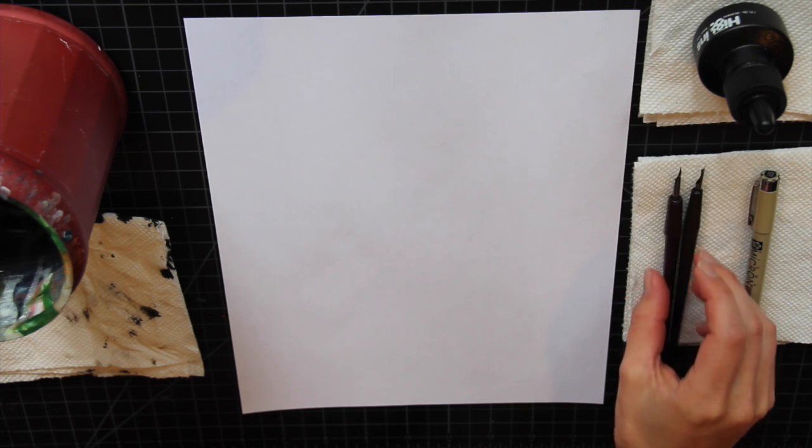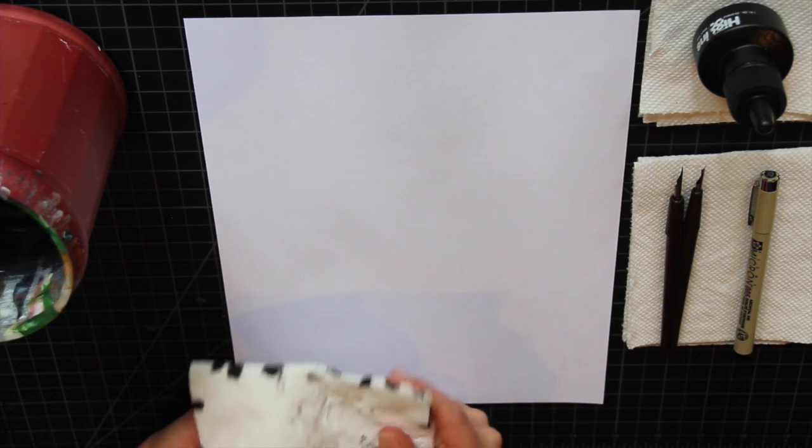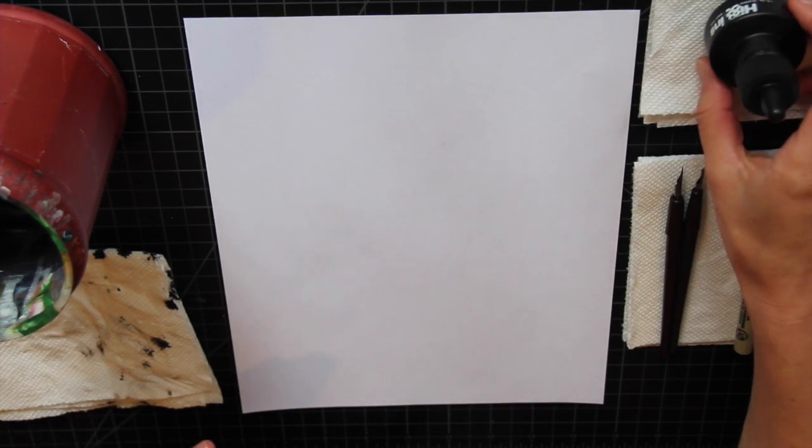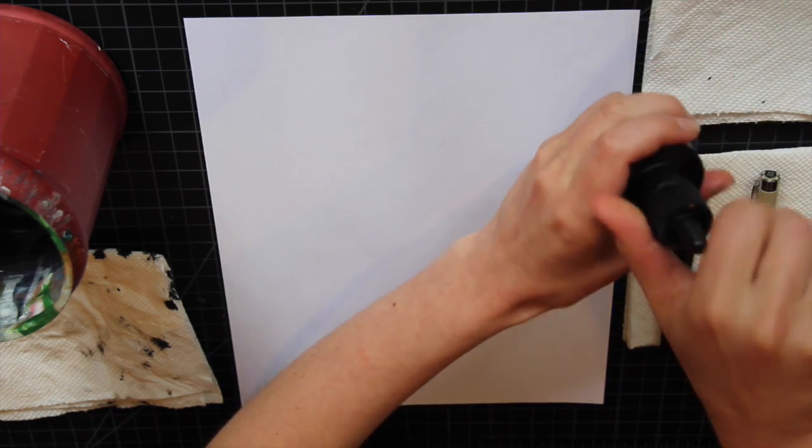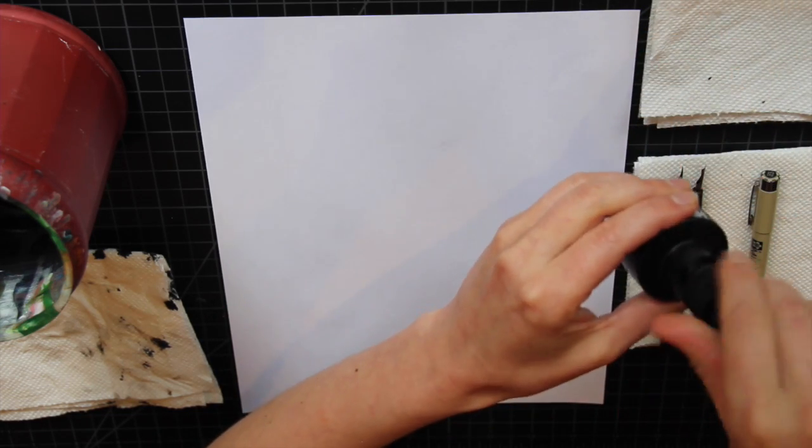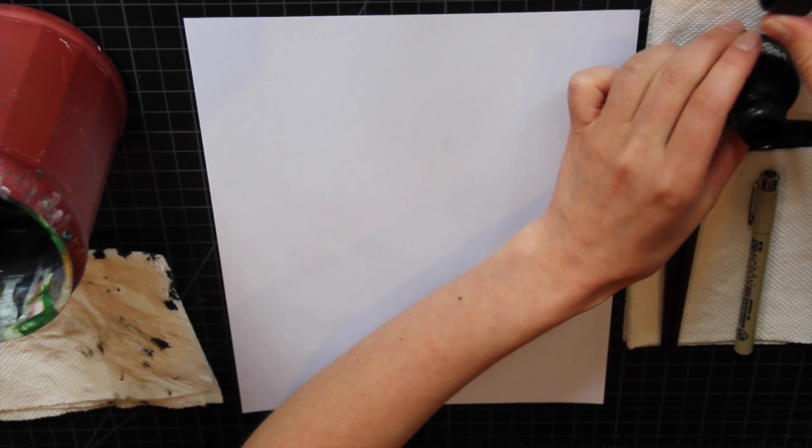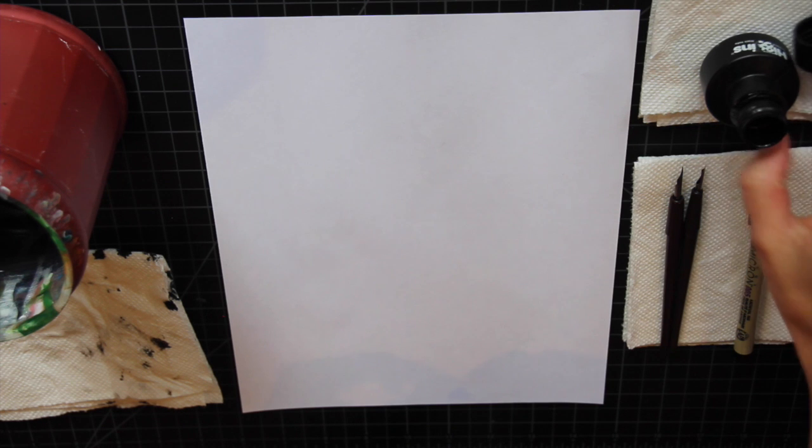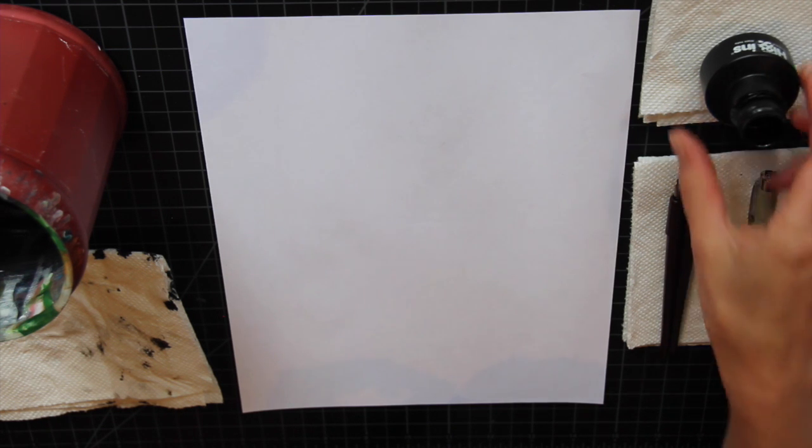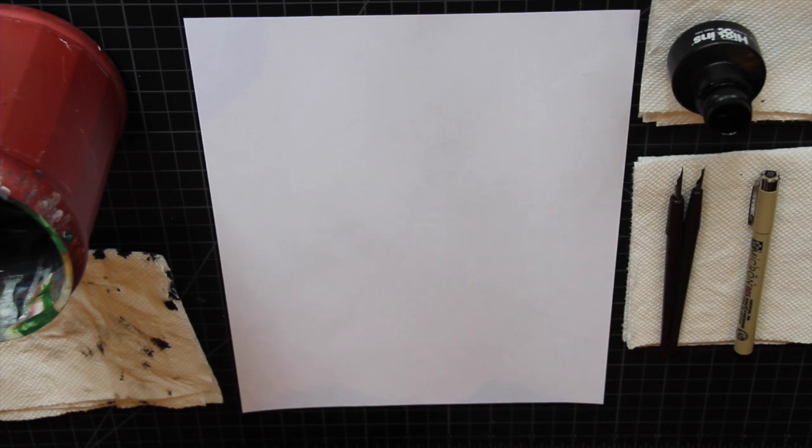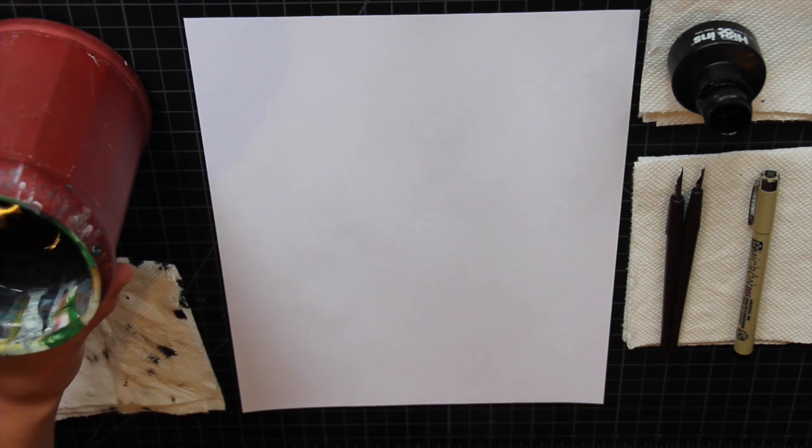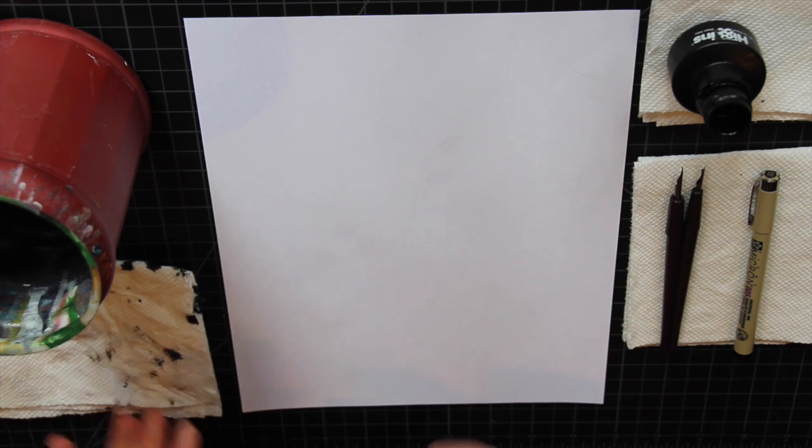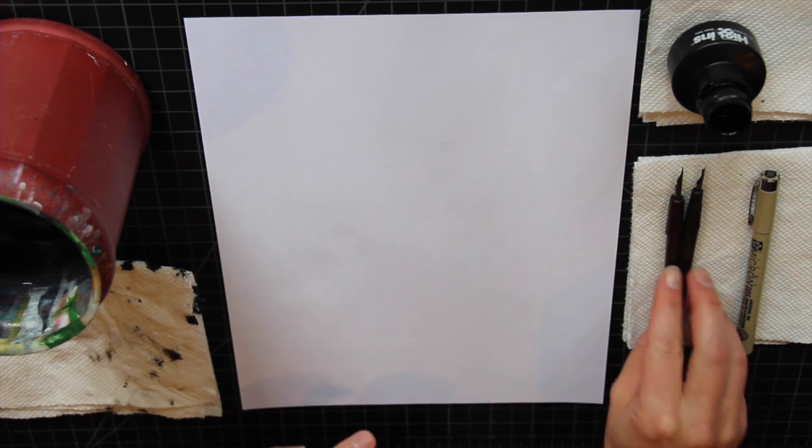You definitely want some paper towels around, mostly just to wipe your pen off, but also I like to rest my ink on a paper towel so that when I open this bottle, the top part doesn't just roll around the desk. A container of ink is nice just to wash out your nib at the end, but you really don't need that very much, and then just printer paper to start.